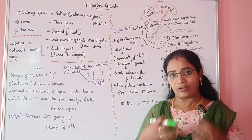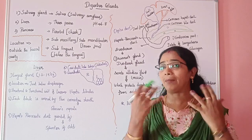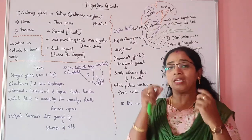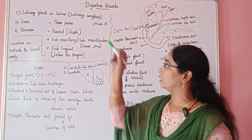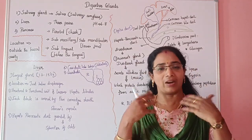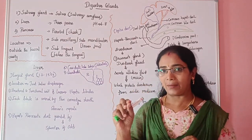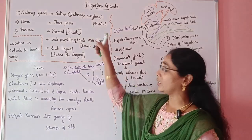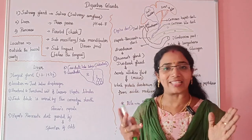Salivary amylase acts on polysaccharides — carbohydrates are polysaccharides, which are macromolecules. Salivary amylase reacts with these macromolecules. The optimal pH level for salivary amylase to work properly is 6.8.